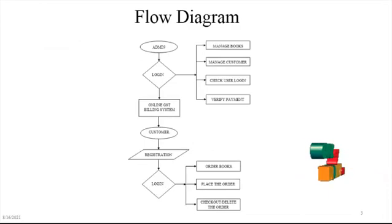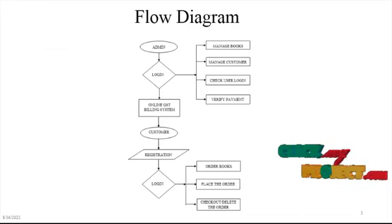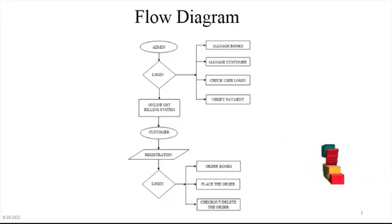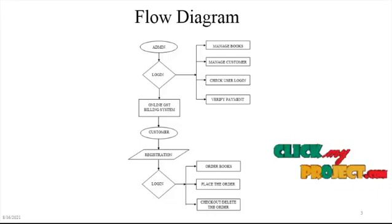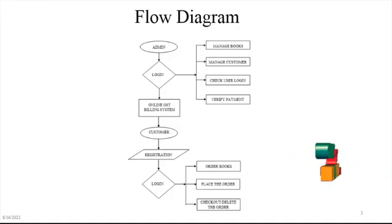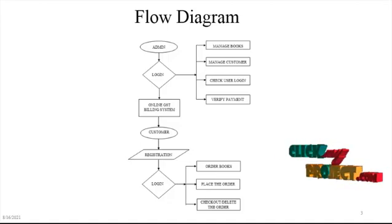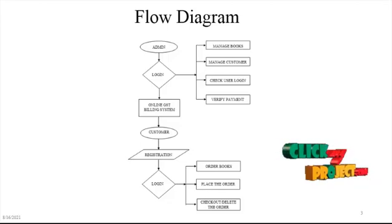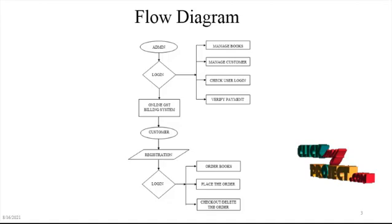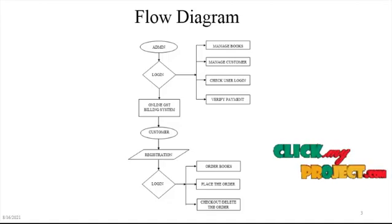The flow diagram of the project consists of an admin module and a user or customer module. The admin module acts as a super user and the customer module acts as a user module. In the online bookstore system, the admin manages the books, customer details, user login activities, and payment verification.